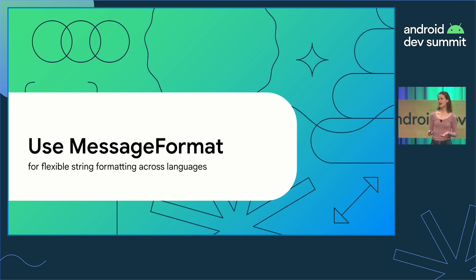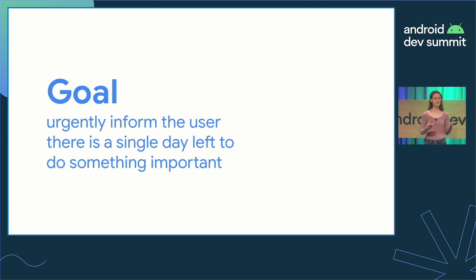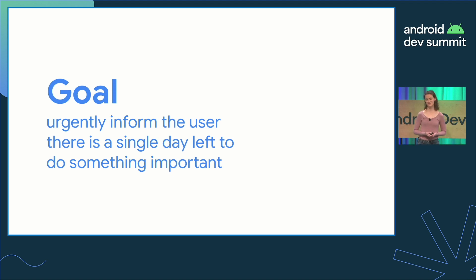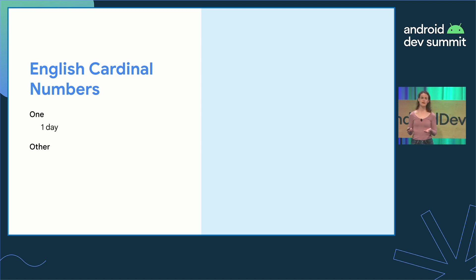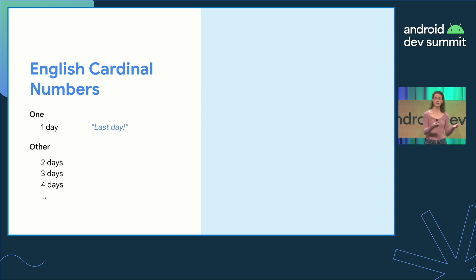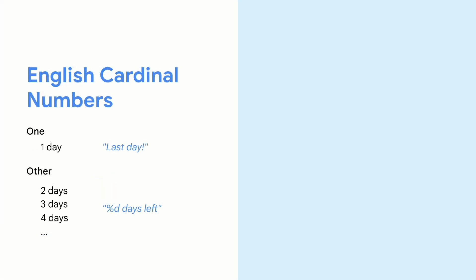Our fifth tip is to use MessageFormat for flexible string formatting across languages. We'll consider the library in the context of string plurals. The goal is to urgently inform the user there is a single day left to do something important, otherwise let them know how many more days they have to complete a task. This is easy in English, which has two cardinal number forms — 'one' maps to the quantity one, and 'other' maps to all other quantities. So we could have a string 'last day' for quantity one and 'N days left' for all other quantities. Our goal is met in English.